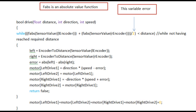Here's an example of some code. Here you see a while loop that applies power to the motors until the encoder value reaches the target distance. The variable 'error' is used to compensate if one side is going faster than the other.